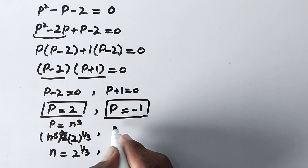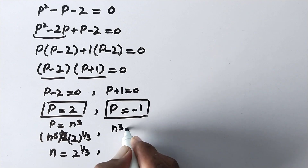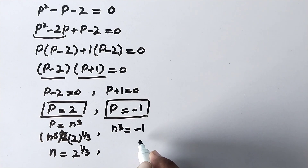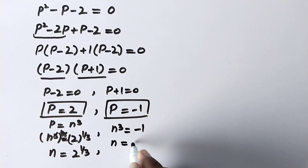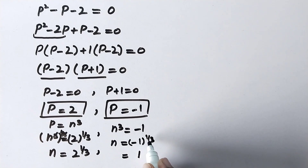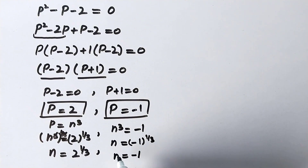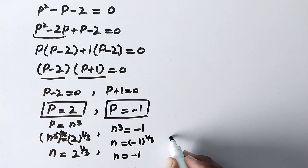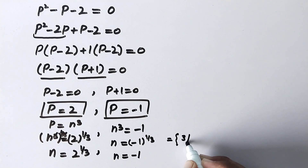When p equals minus 1, we have n cubed equals minus 1. Repeating the same process, n equals minus 1 to the power 1 over 3. Since any negative value raised to an odd power remains negative, the cube root of minus 1 is minus 1. So the two real roots are n equals the cube root of 2 and n equals minus 1.